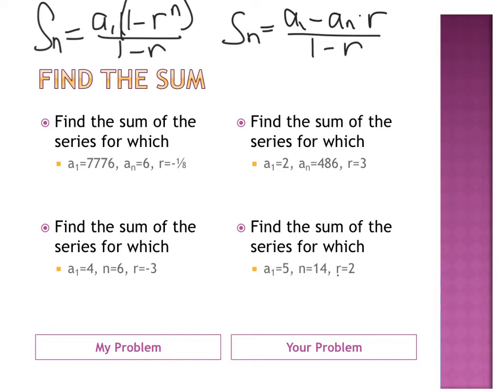So, then we plug it in and we use our calculators to evaluate it. S of N equals 7,776 minus An, 6 times negative 1 eighth, times R, divided by 1 minus negative 1 eighth.